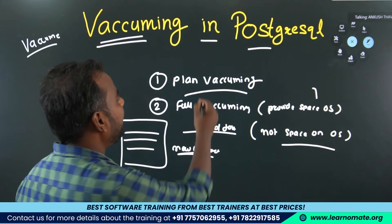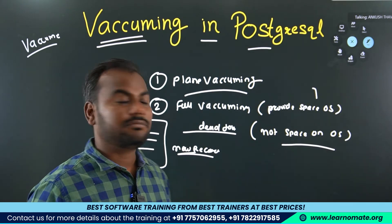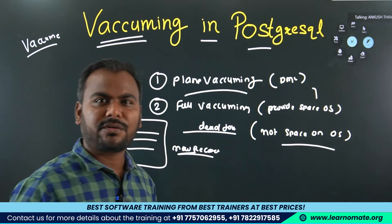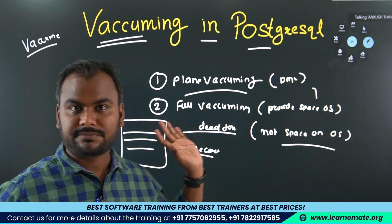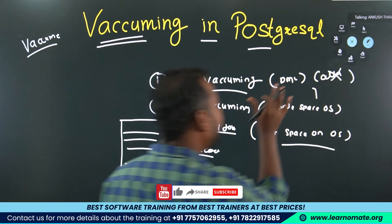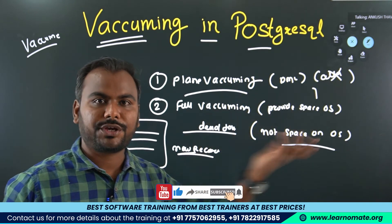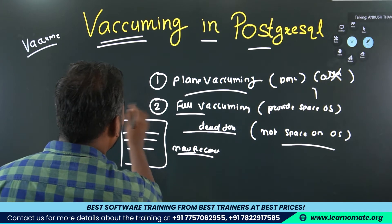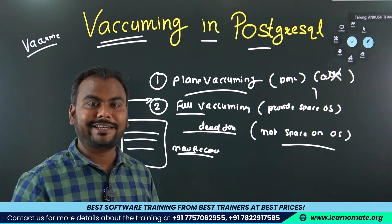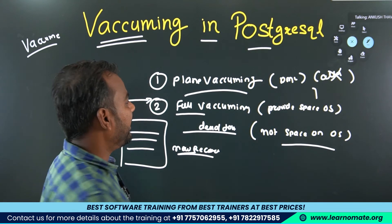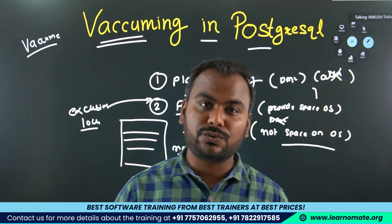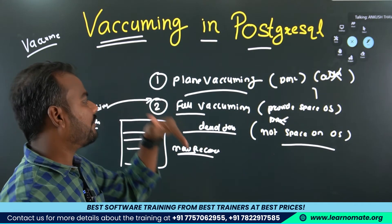In plain vacuuming, you can still perform DML operations on the table — the table will not be locked. However, you cannot perform ALTER operations. In full vacuuming, it creates an exclusive lock, meaning when full vacuuming is running on a table, no DML operations are possible.